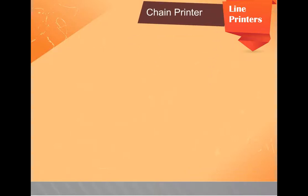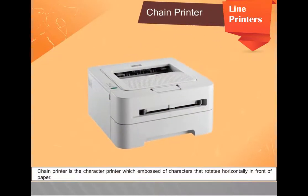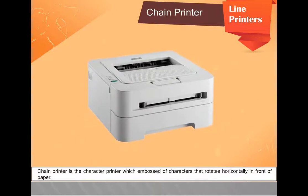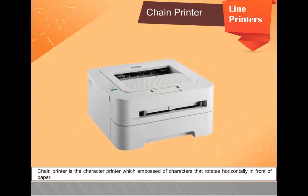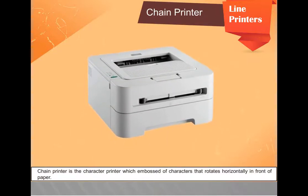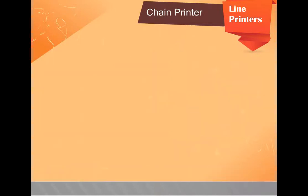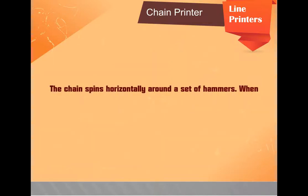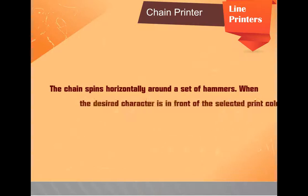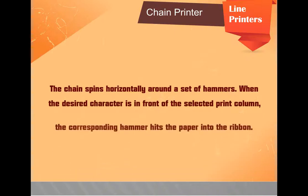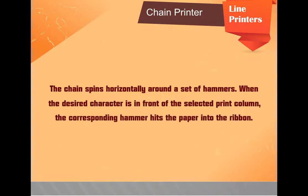A chain printer is a character printer which has embossed characters that rotate horizontally in front of the paper. A standard character set may have 48, 64, or 96 characters. The chain spins horizontally around a set of hammers. When the desired character is in front of the selected print column, the corresponding hammer hits the paper into the ribbon.